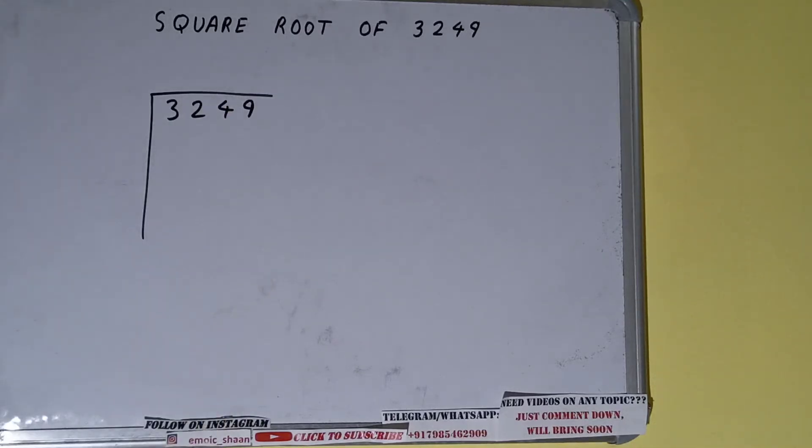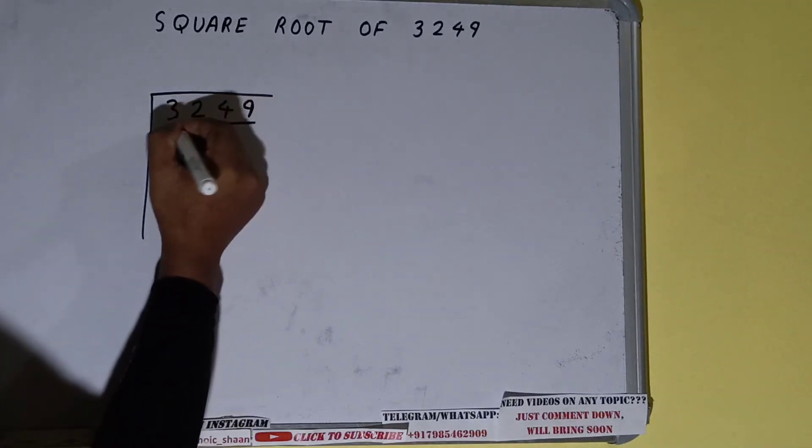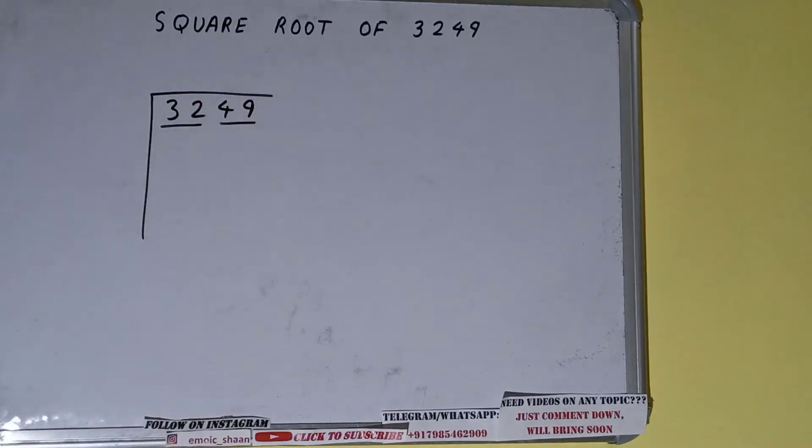The next thing we need to do is mark the pairs from the right-hand side. So one pair will be 49 and one pair will be 32. Okay, so first we'll divide this 32 and then we'll bring down the other pair.